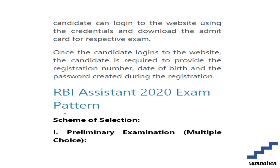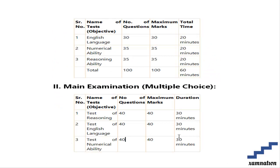The first stage is the preliminary examination, a multiple choice exam with three sections: English Language (30 questions, 30 marks, 20 minutes), Numerical Ability (35 questions, 35 marks, 20 minutes), and Reasoning Ability (35 questions, 35 marks, 20 minutes). The time is fixed per section — you cannot carry over time between sections. Total: 100 questions, 100 marks, 60 minutes.